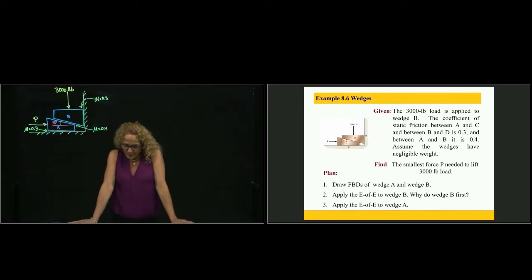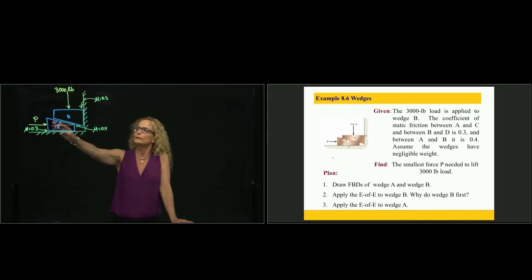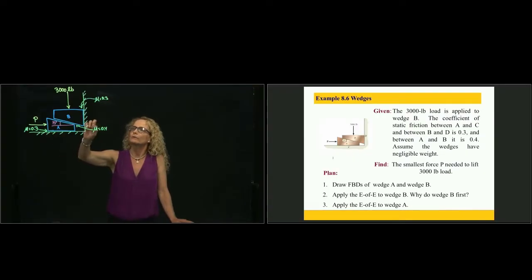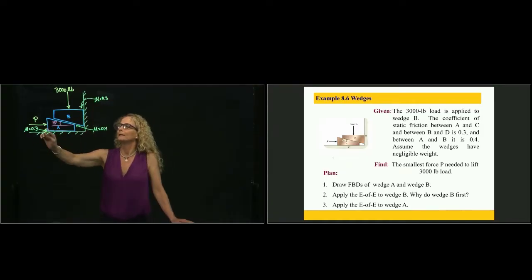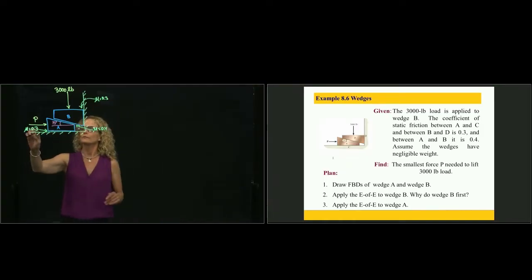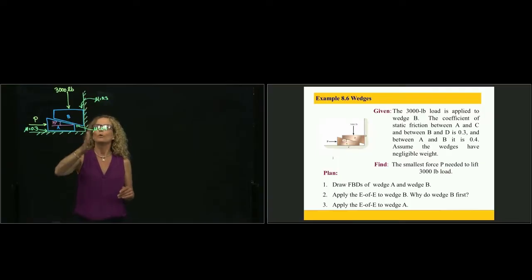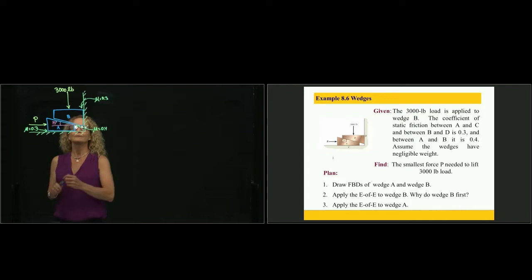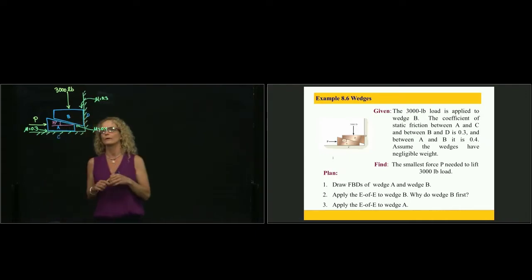This is problem 8.6. Here we have two wedges: this is A and this is B. A has a slope of 15 degrees, and B can slide over A. All the surfaces are rough, so we have static coefficients between all surfaces. Between A and the floor we have 0.3, and between B and the wall we have 0.3 as well. Let's name this wall D and this one C.